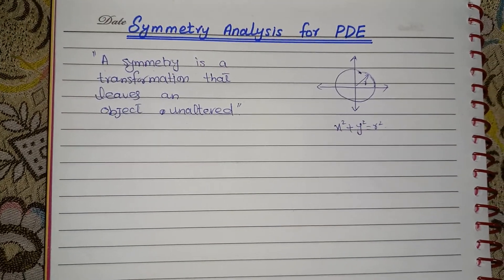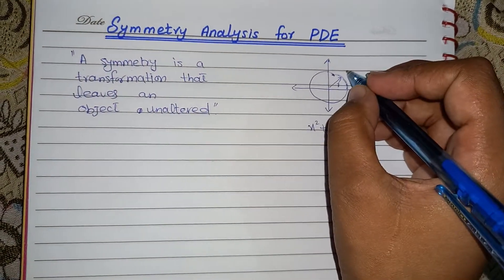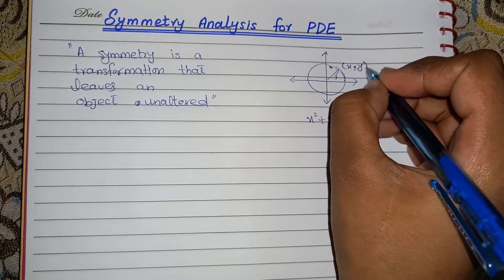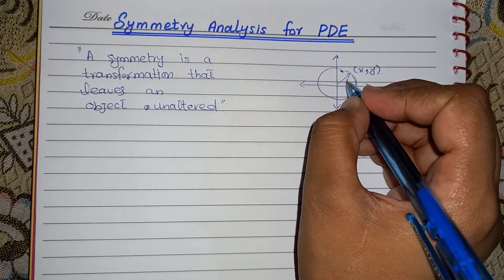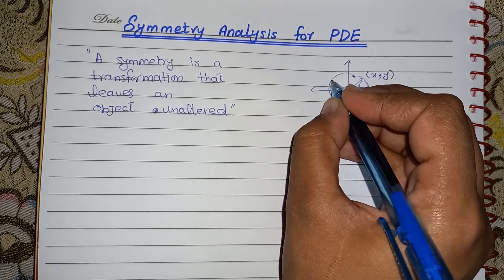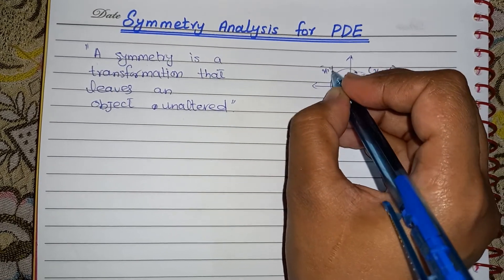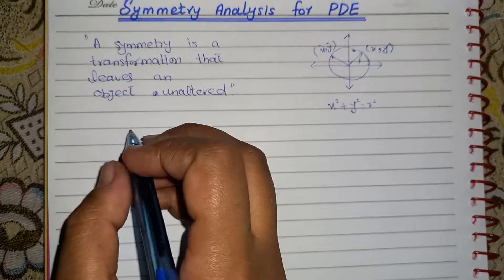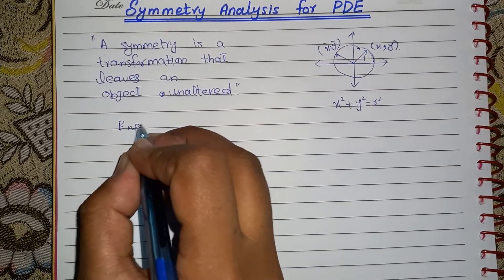Now students, let me explain it with an example. Let's say here we have a point x, y. And we say that we have applied a transformation on this point and we have found a new point that is x bar, y bar. And here we have a circle of radius 1.